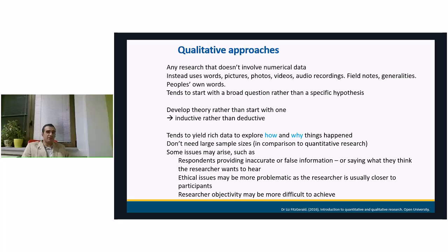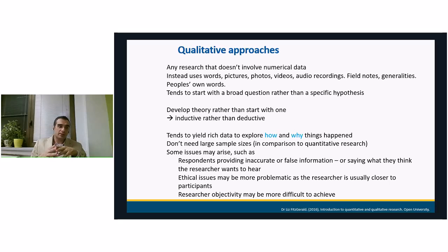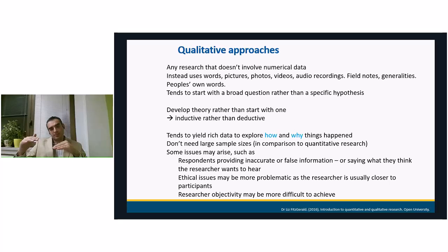Researcher objectivity can be more difficult to achieve in qualitative research. For example, if I am examining traditional gender roles and I am a feminist, I will tend to find results that are in line with my views. Therefore, in my explanation I should state my position clearly. The researcher should state this before the research and clearly declare it in the paper, so readers can evaluate what is based on the researcher's personal views and what reflects reality.